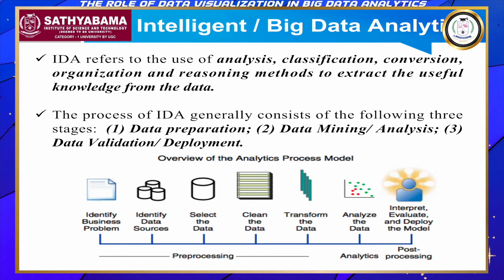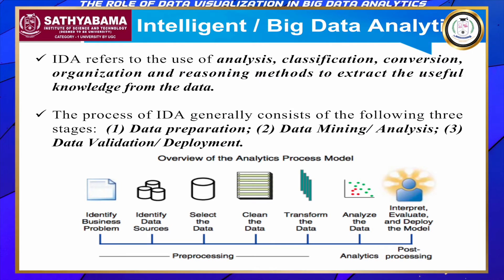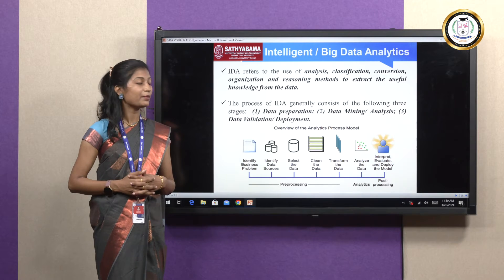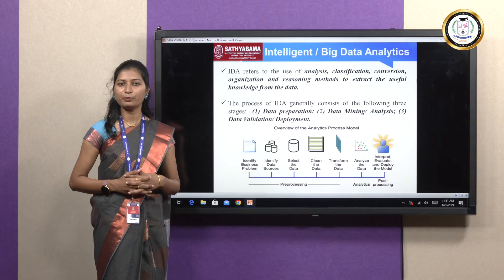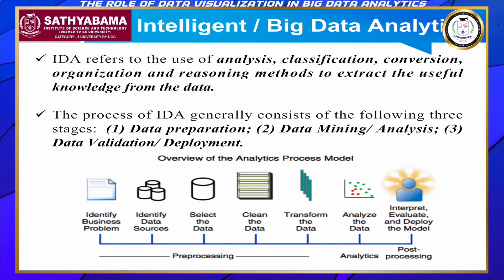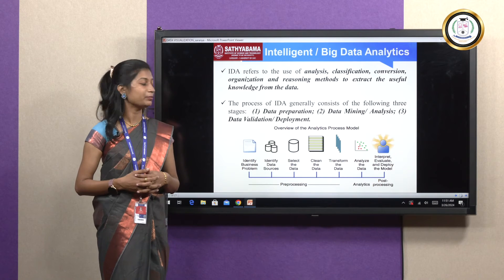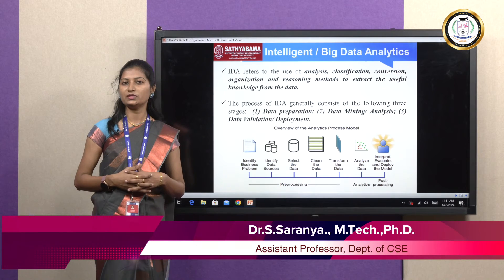This kind of data can be handled by the intelligent data analysis process, or big data analytics. Generally, intelligent data analysis is defined as analysis, classification, conversion, organization, and reasoning methods to extract valuable insights. It consists of three stages: data preparation, data mining and analysis, and data validation and deployment. The data preparation stage, also known as pre-processing, identifies data sources from multiple mediums, selects and streamlines the data in a structured way, then cleans the data through noise removal and other pre-processing techniques before transforming it for analysis.